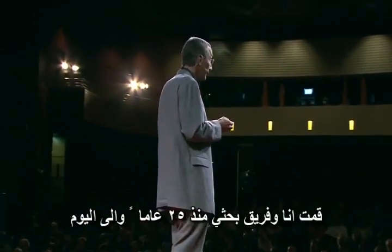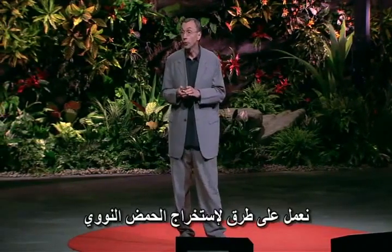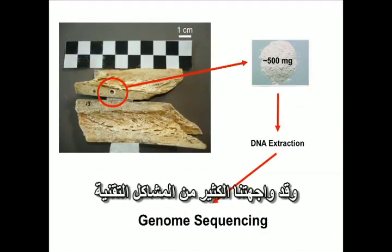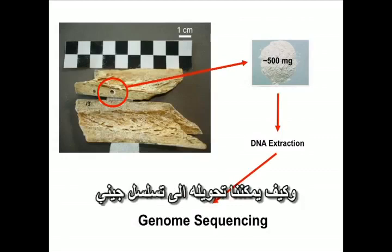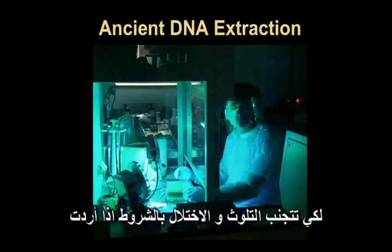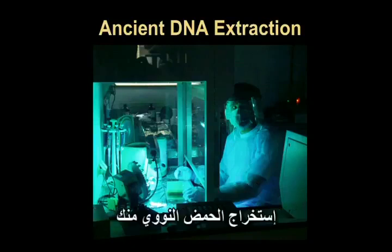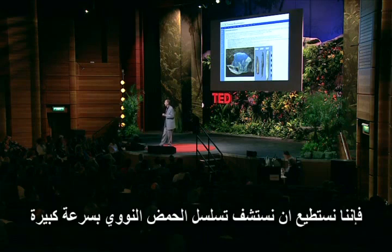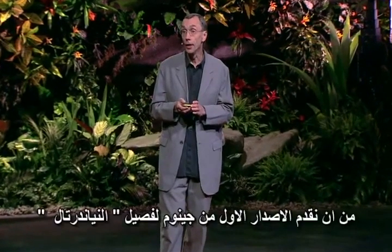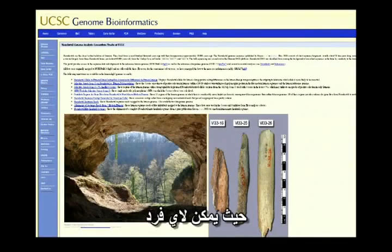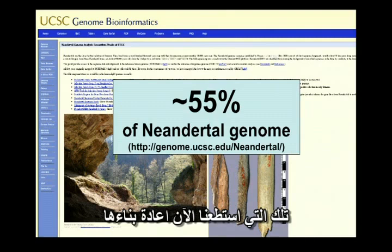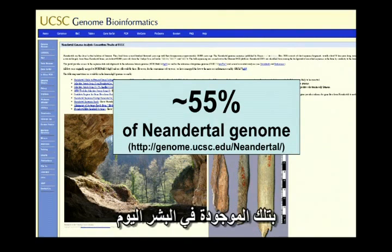To begin to answer such questions, my research group has for over 25 years worked on methods to extract DNA from remains of Neanderthals and extinct animals that are tens of thousands of years old. This involves technical issues in how you extract the DNA, how you convert it to a form you can sequence, and working very carefully to avoid contamination with DNA from yourself. In conjunction with methods that allow very many DNA molecules to be sequenced very rapidly, this allowed us last year to present the first version of the Neanderthal genome — 55% of it reconstructed so far — so that anyone can look at it on the internet and compare it to the genomes of people who live today.